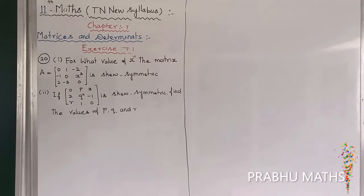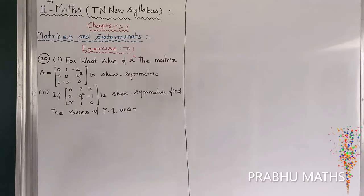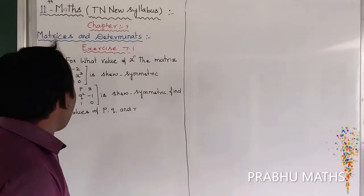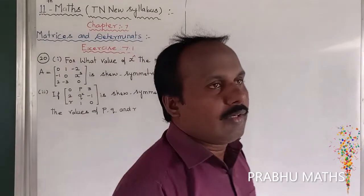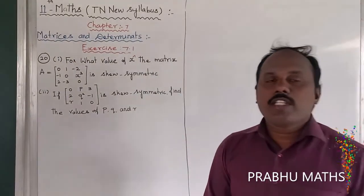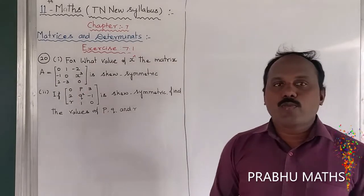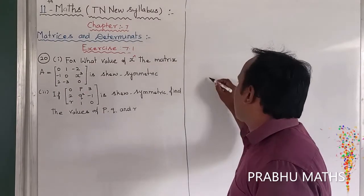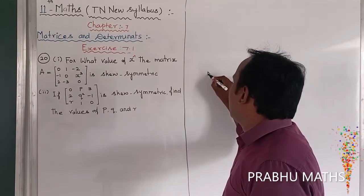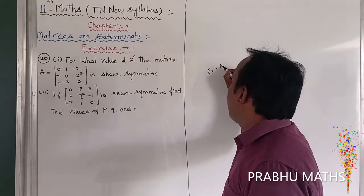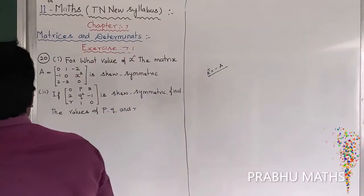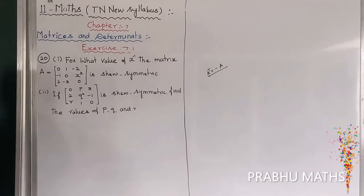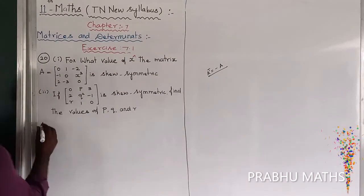This is the second subdivision. If a 3 by 3 matrix is a skew-symmetric matrix, find the value of p, q, r. The condition for a skew-symmetric matrix is that A transpose is equal to minus A.